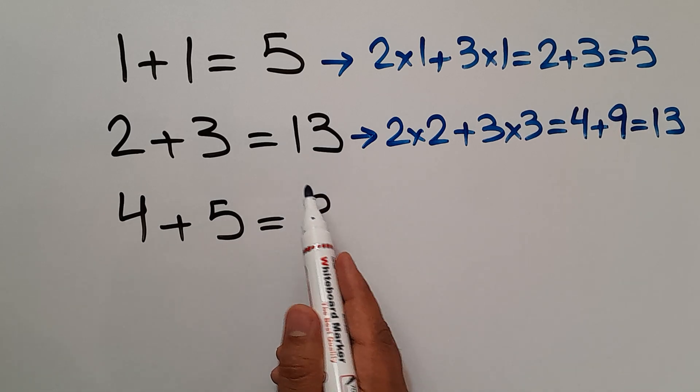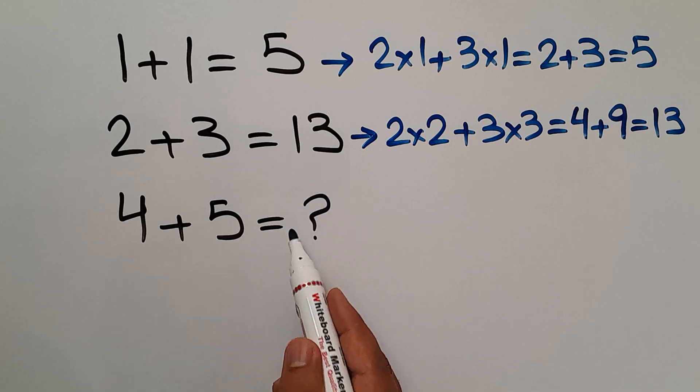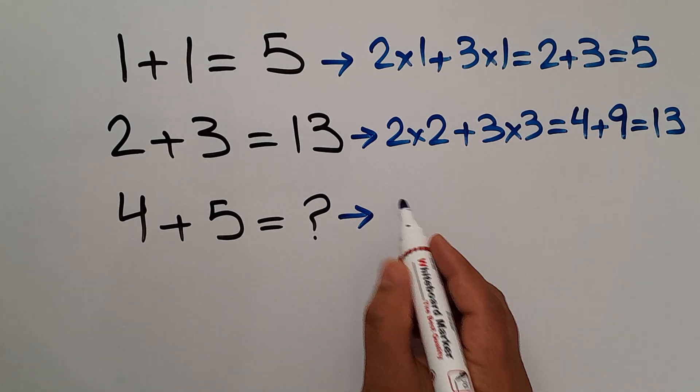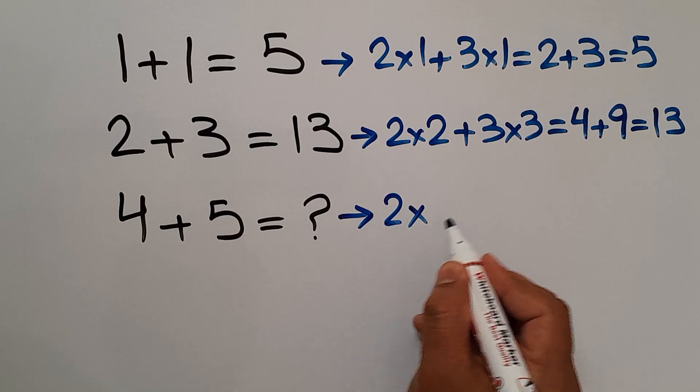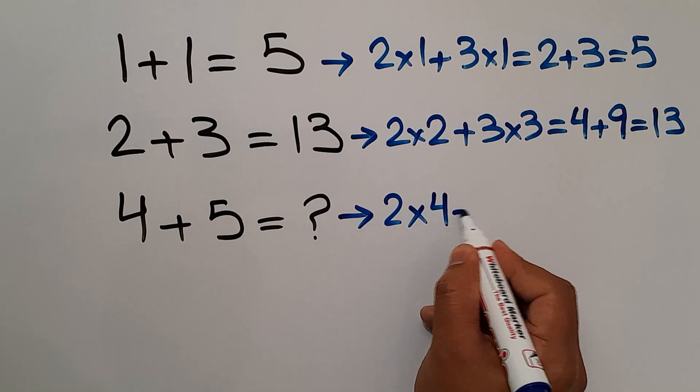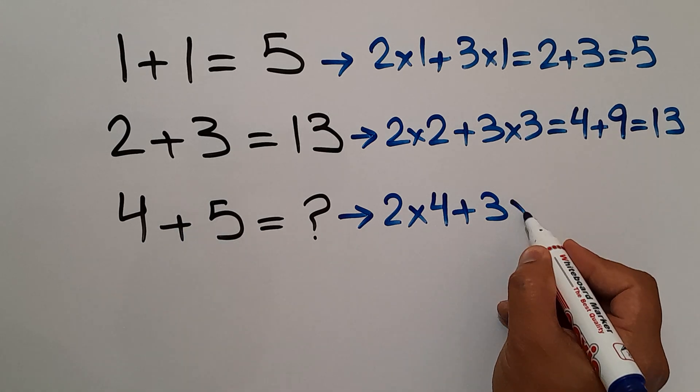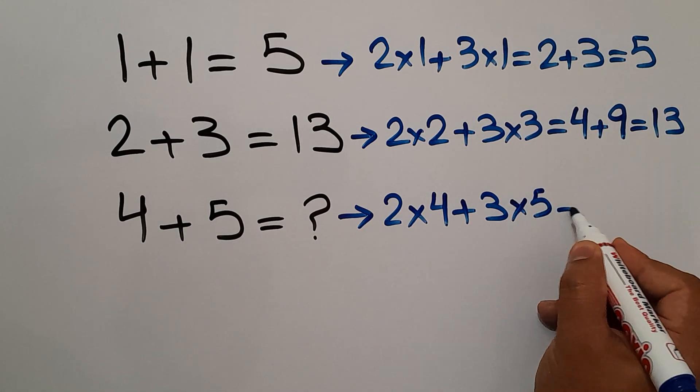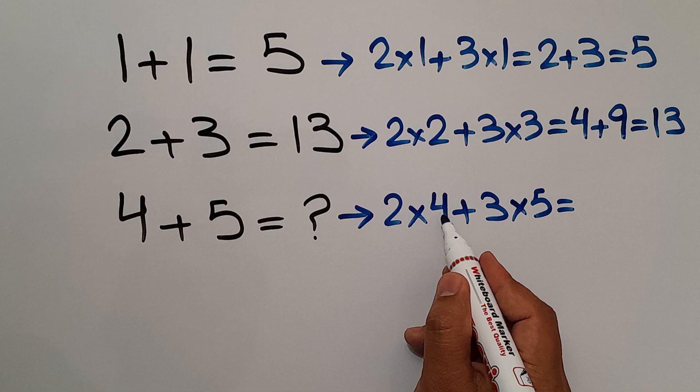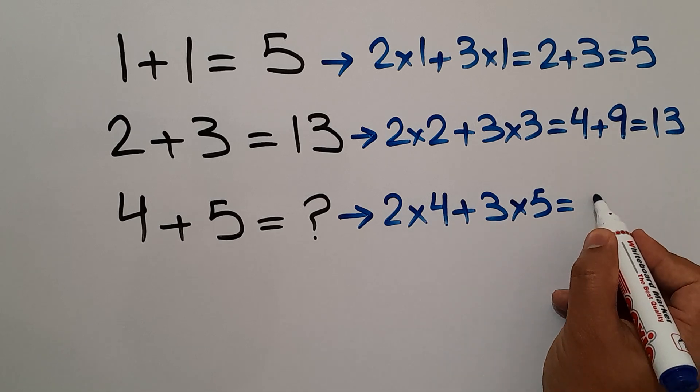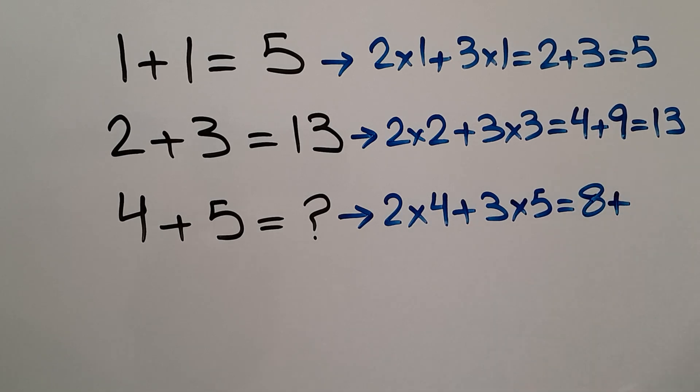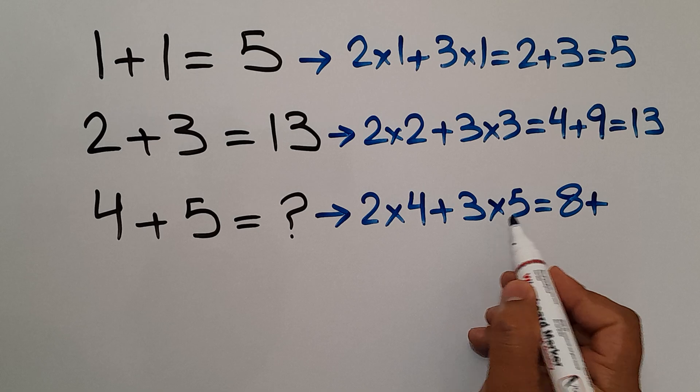Okay, 2 times 4 plus 3 times the second number, which is 5, so 3 times 5. 2 times 4 equals 8, so 8 plus 3 times 5, which equals 15.